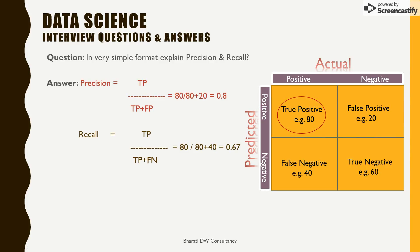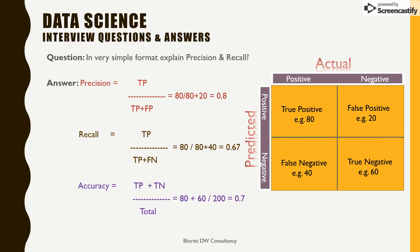Recall is true positive divided by the combination of true positive and false negative, which gives 0.67 in this example. Accuracy of the model is calculated as true positive plus true negative divided by the total — meaning all correct predictions divided by the entire sample, which is 80 plus 60 over 200, giving 0.7. Please take this picture, memorize it, understand it, and that's how you'll be able to answer precision and recall questions.